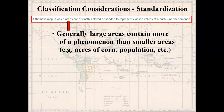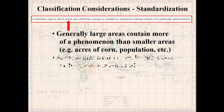When you make a map without standardizing, the message you send is basically that larger counties have more corn. But if you want to send a message about what percentage of a particular county is in corn, or how much of all the corn grown in the state is in this county, you might want to standardize. There are two ways to standardize.